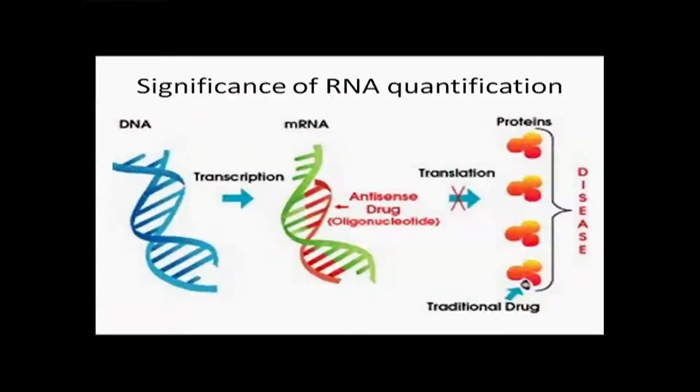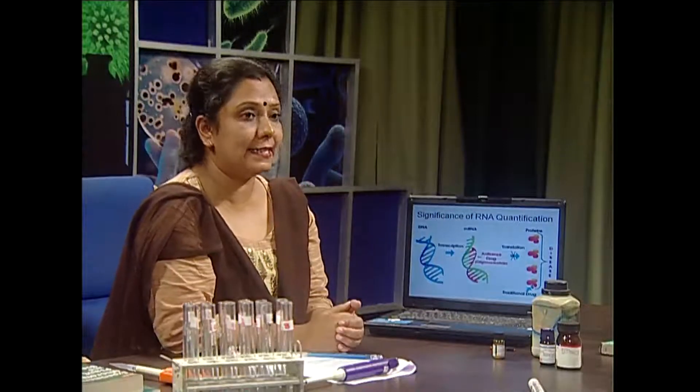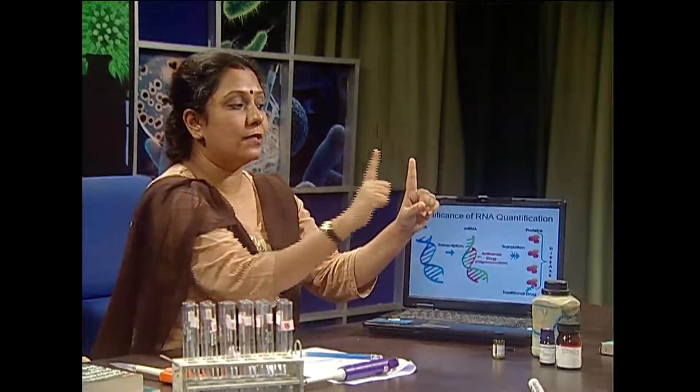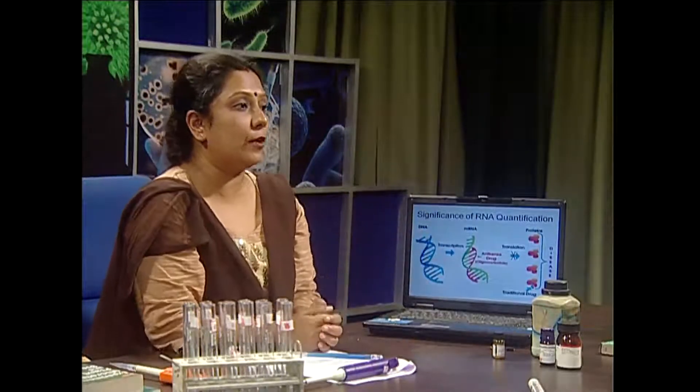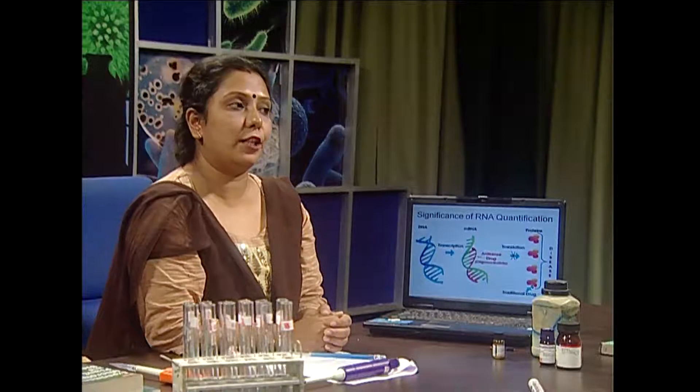Before going into the details for RNA quantification, you have to know the significance of RNA quantification. Why are you quantifying RNA? The quantified RNA is used against particular diseases. For a particular disease, some proteins are responsible. Those proteins are synthesized from mRNA — called sense RNA. You apply antisense RNA from outside; that antisense RNA binds with the sense one and inhibits it from producing the proteins responsible for the disease condition.